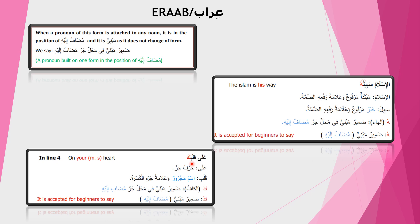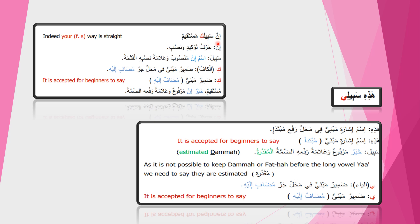The last example is an inna sentence. Inna is harf tawkid yansib wa yarfa'. Sabila is ism inna — it has fatha on the lam because ism inna is mansub. The attached kaf mukhatibah here: ka damir mabni fi mahal jarr mudaf ilayhi. This completes the explanation of attached pronouns with nouns. In the next video we will cover attached pronouns with particles and verbs.